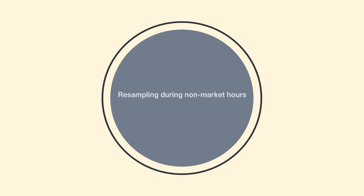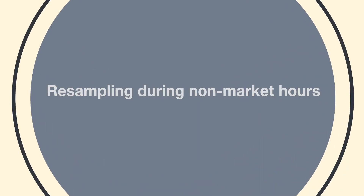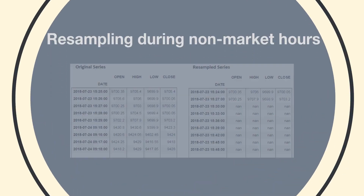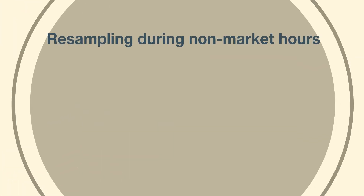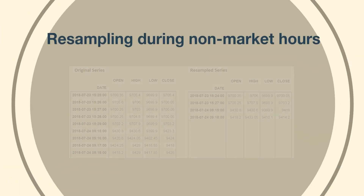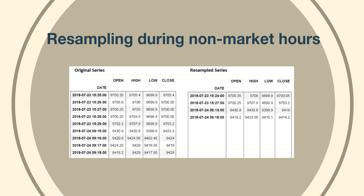When you use the resample function for downsampling, pandas unfortunately will generate all timestamps at the given frequency between the dates, including non-market hours. Since there are no available price data points during non-market hours, it will be filled with NaN values. The simplest way to handle this is to use the dropna function to get the correct resampled series.